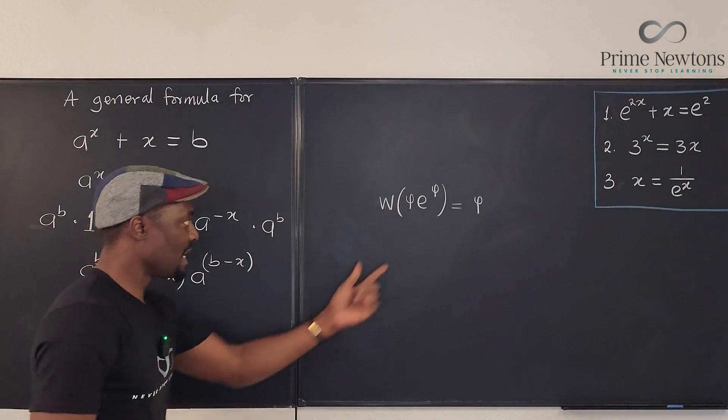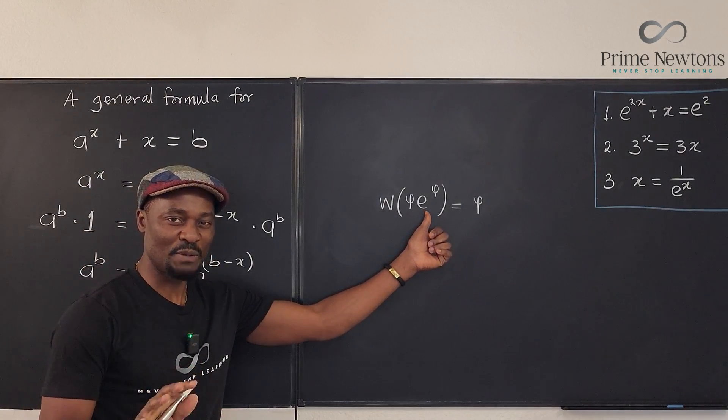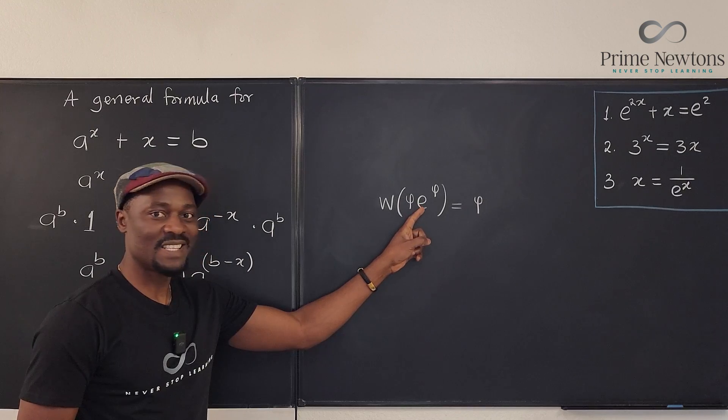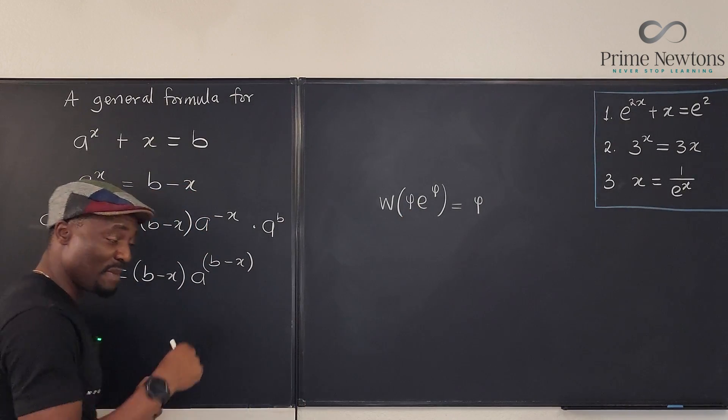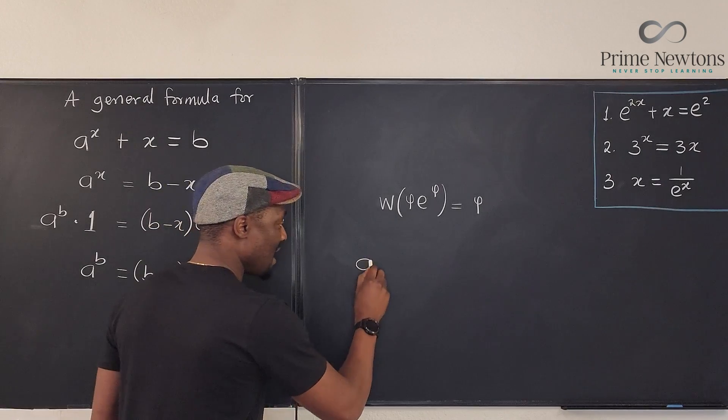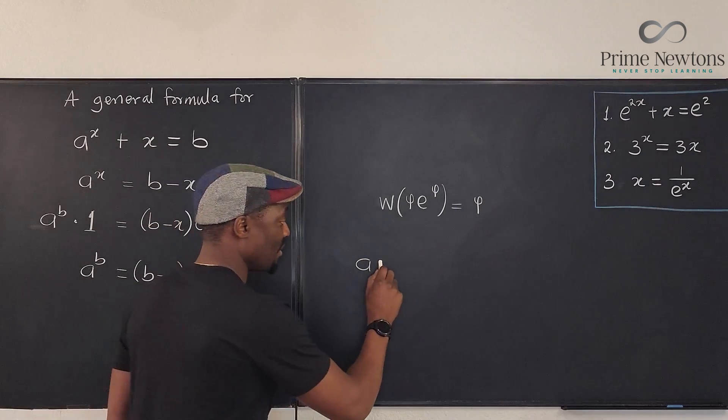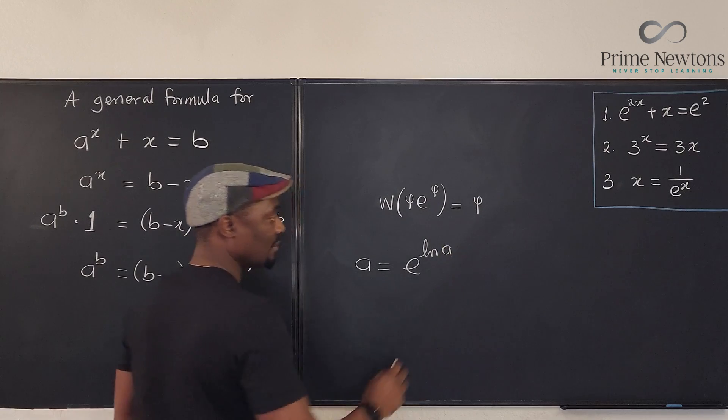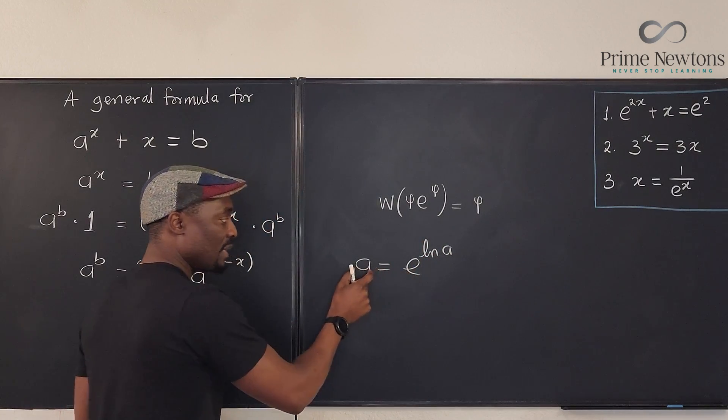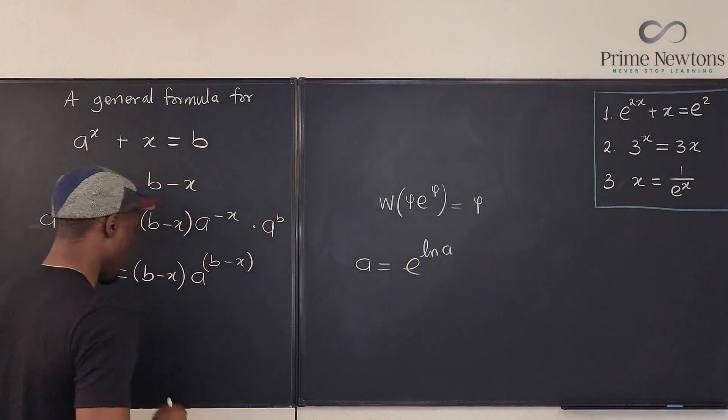So it's beginning to look like this. The only problem is what is here is e, but what is here is a. I need to change this to e. And remember what we say that any expression or any term can be written in terms of e. You just need to write it this way because this cancels this. So we're going to replace a with e to the ln of a.